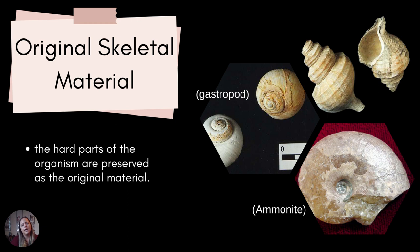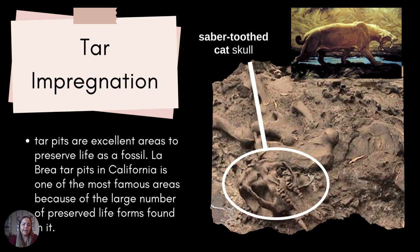With original skeletal material, the hard parts are preserved and you are looking at original samples when you're looking at the fossil. Here are a couple of shells — a gastropod in the upper left and an ammonite in the bottom right. These are shelled organisms where you have the shell, which is technically a fossil because the animal's not there anymore, but this is original skeletal material.